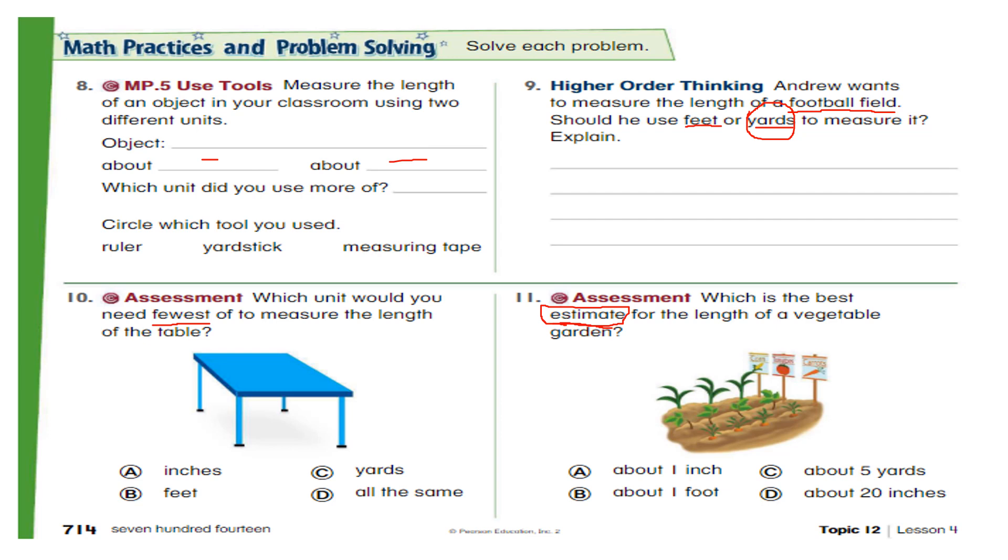Means equal to 2 books. Or the garden could be of 5 yards. Just circle the best answer. Which is the best estimate for the length of this vegetable garden.